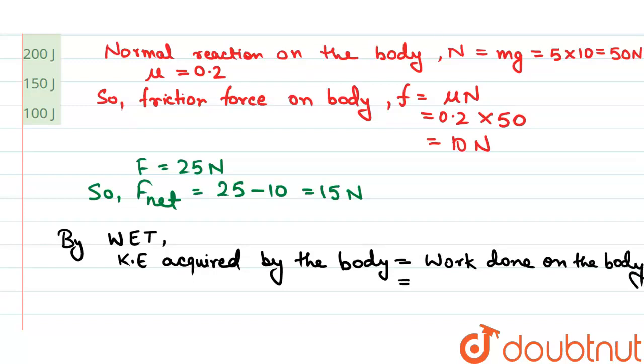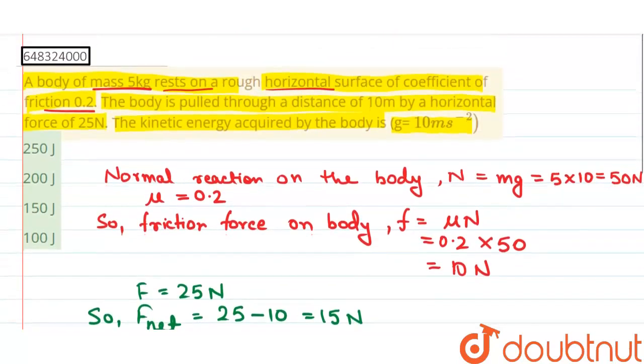Work done on the body equals F net into S, where S is the distance travelled by the body, which equals 10 meters.